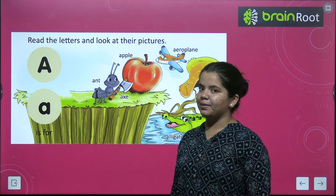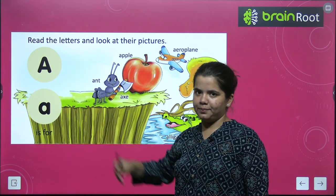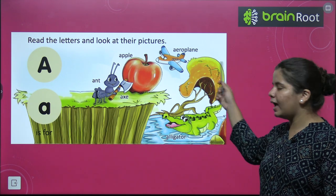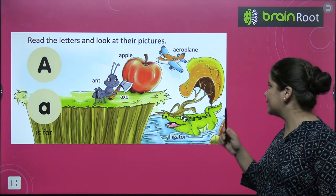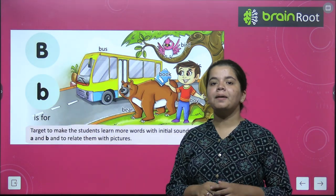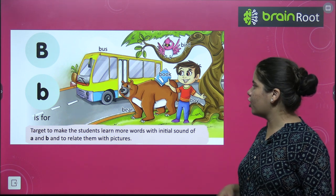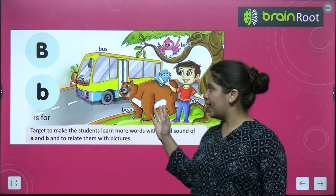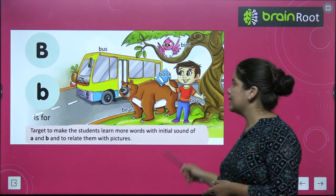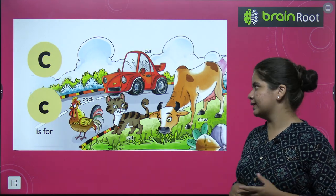First we have A. Dekho, ye capital A hai, ye small a hai. A is for ant, apple, aeroplane, alligator. Next hamare paas hai B. B kis-kis ke liye ho sakta hai? B is for bus, bear, bird, boy, book. In sab ke liye hum starting mein B use karte hain.